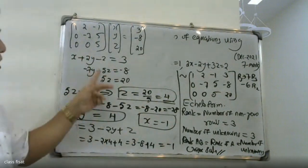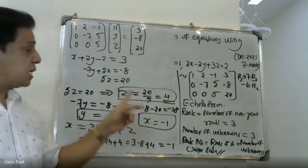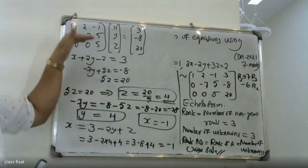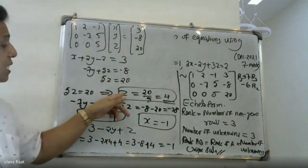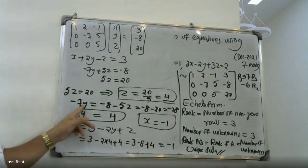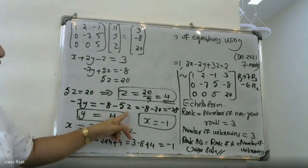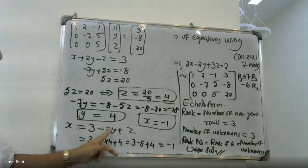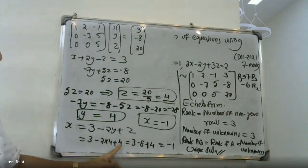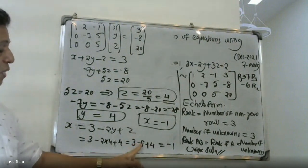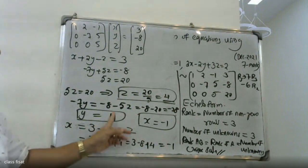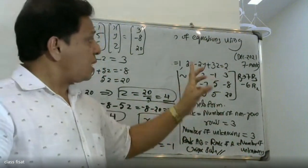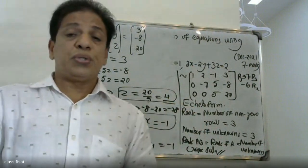The system of equations can be expressed as: first equation x plus 2y minus z equals 3; second equation minus 7y plus 5z equals minus 8; third equation 5z equals 20. From the third, z equals 4. Back substitution gives y equals 4 and x equals minus 1. This is the university question solution. We note that the unique solution is x equals minus 1, y equals 4, z equals 4.